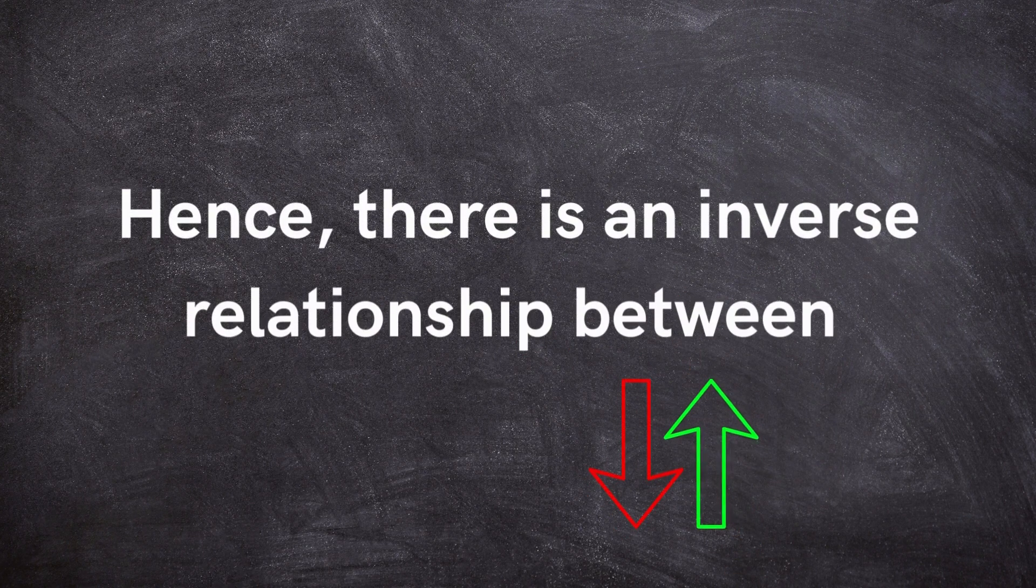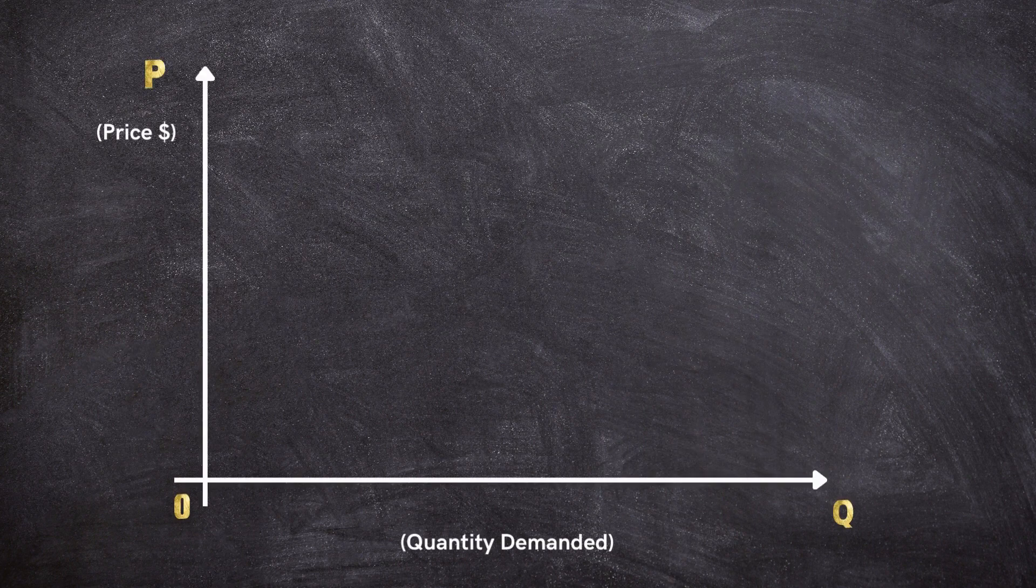Hence, there is an inverse relationship between the price of a good or service and the quantity demanded. This inverse relationship is what gives us the downward sloping demand curve.